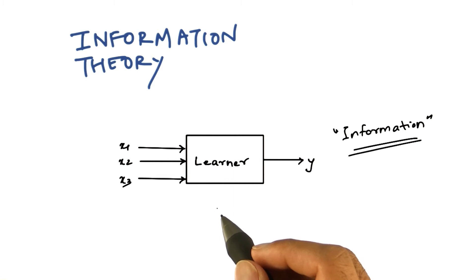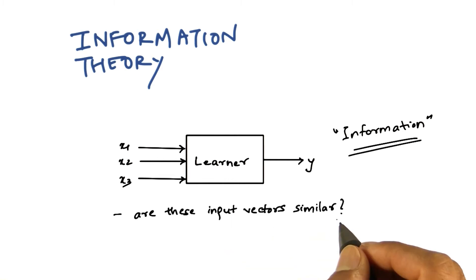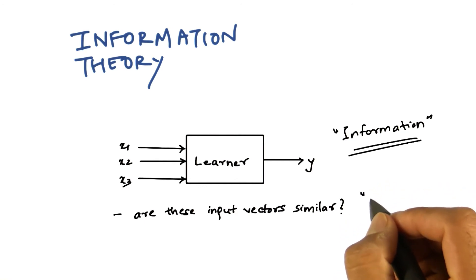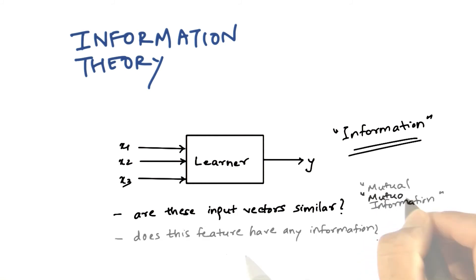so that we can ask interesting questions like are these input vectors similar? If they are not similar, then how different they are, and so on. We call this measure as mutual information. Or we could ask if this feature has any information at all. So we'll call this measure entropy.